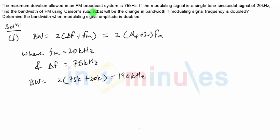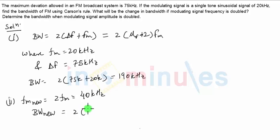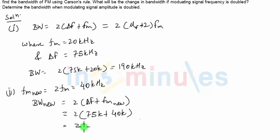In the second part, the question asks: what will be the change in bandwidth if the modulating frequency is doubled? The new modulating signal frequency fm_new = 2 × 20 kHz = 40 kilohertz. Even when doubling the modulating signal frequency, the value of Δf remains constant at 75 kilohertz, as the question states the maximum deviation allowed is fixed. So the new bandwidth = 2(75k + 40k) = 230 kilohertz.